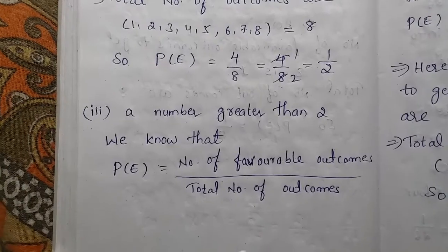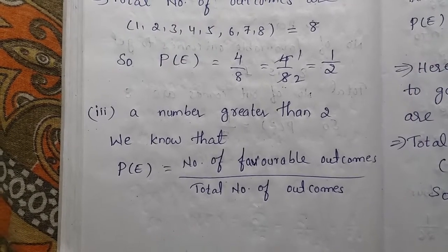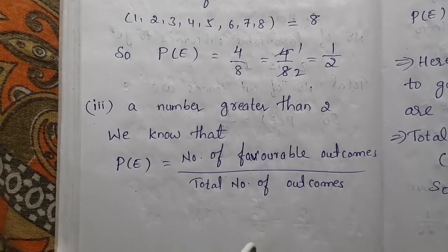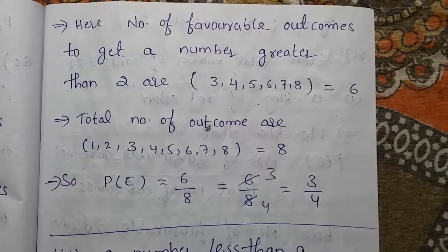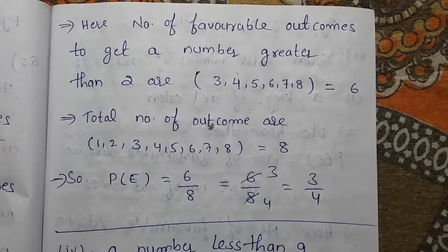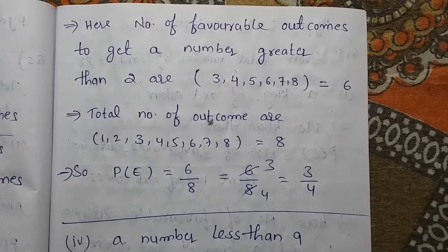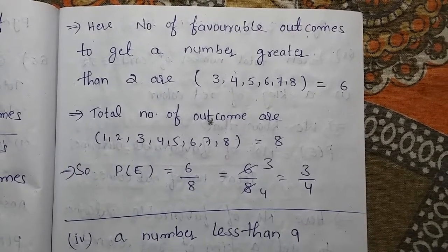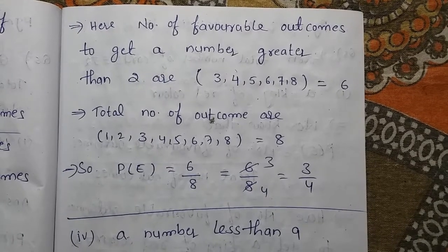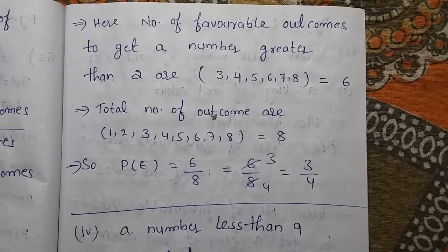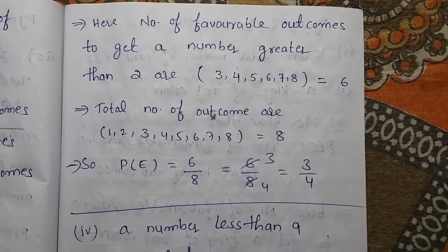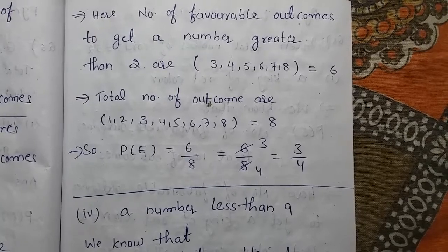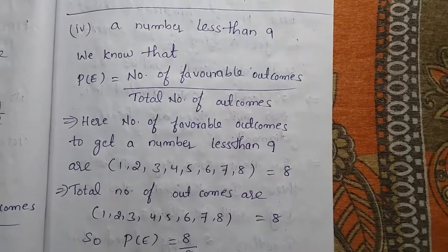Next question: a number greater than 2. Probability is number of favorable outcomes by total number of outcomes. The favorable outcomes to get a number greater than 2 are 3, 4, 5, 6, 7, 8 — so the total number of favorable outcomes are 6, and total number of outcomes are 8. The probability is 6 by 8, which simplifies to 3 by 4.